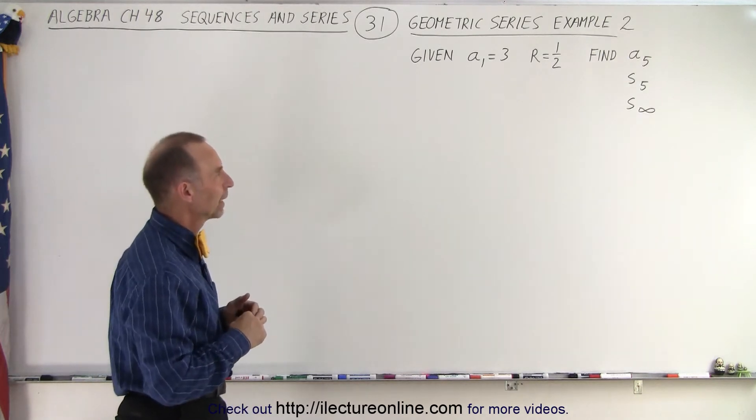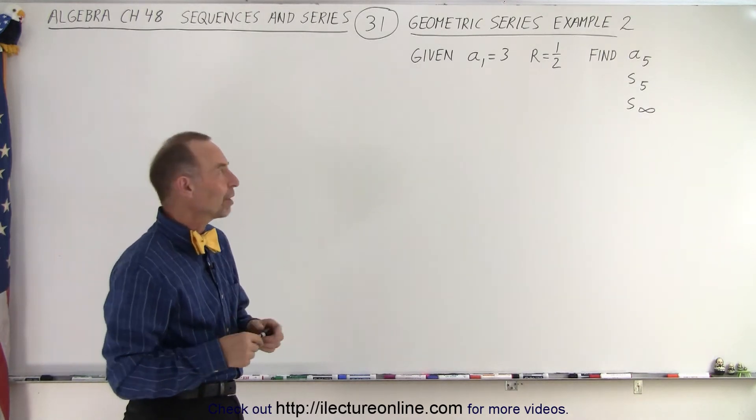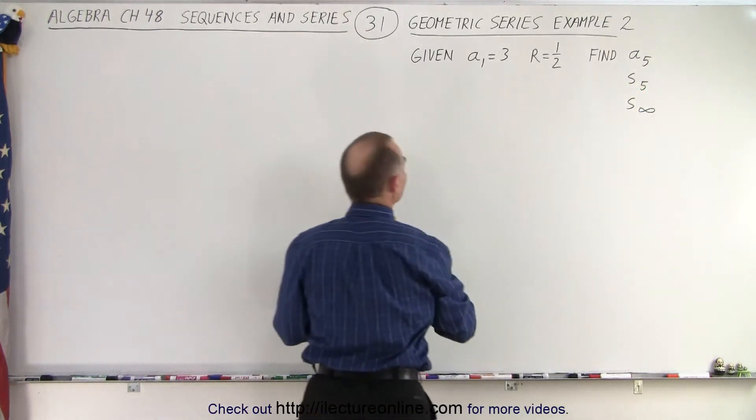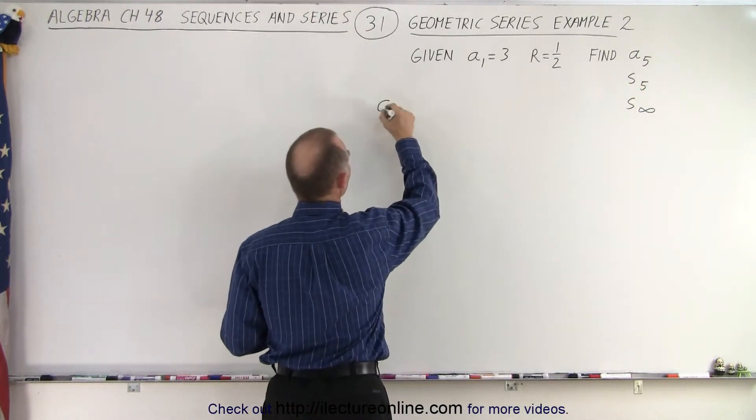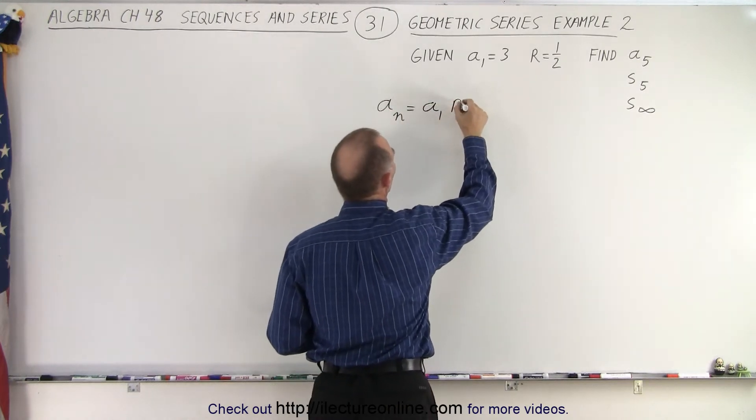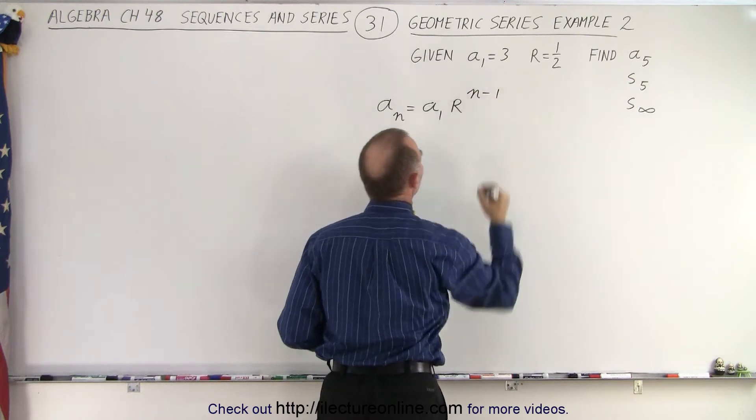Alright, let's do that. We need to know the equation of the way to find the nth number in the series. So we know that a sub n is equal to a sub 1 times r to the n minus 1 power.